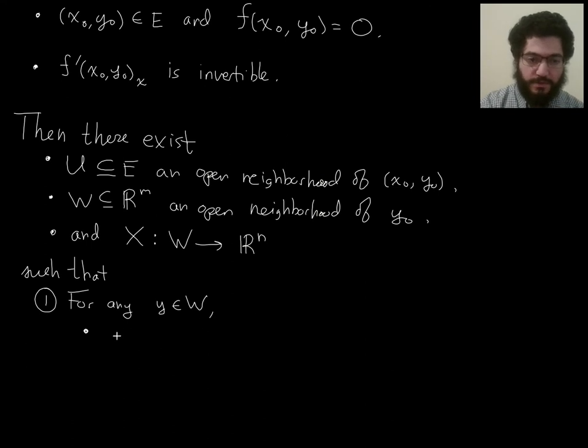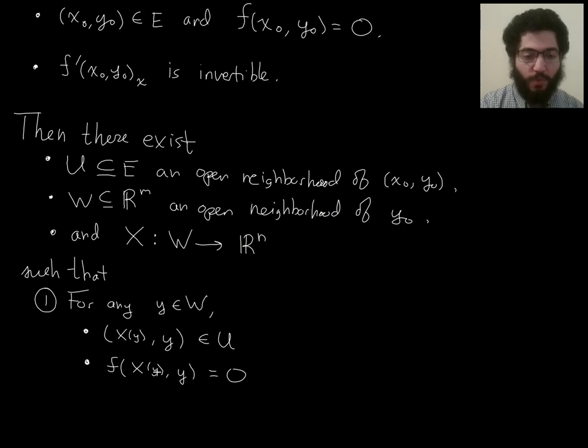So, at the very least, it's in E, which is the domain of our function f. And, secondly, if you apply little f to this (x,y) pair, then you get zero. So, in other words, y and X(y) satisfy the relationship or the list of equations specified by f.